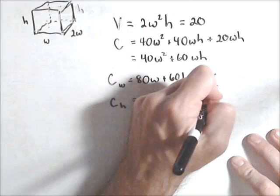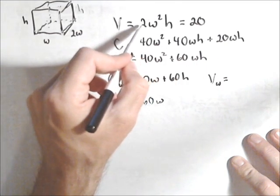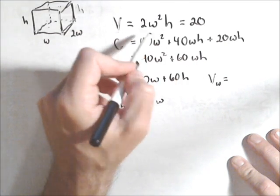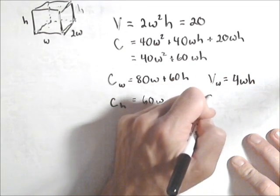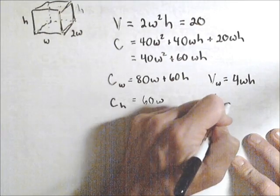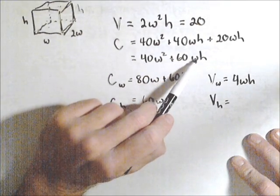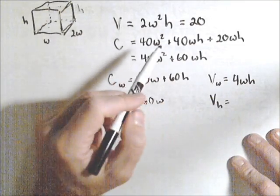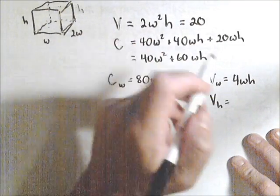Now we're going to do the same here, we're going to do V sub W, which is, we're going to take the partial with respect to W, so that'll be 4WH, and then we got V sub H, which is going to be 2W².